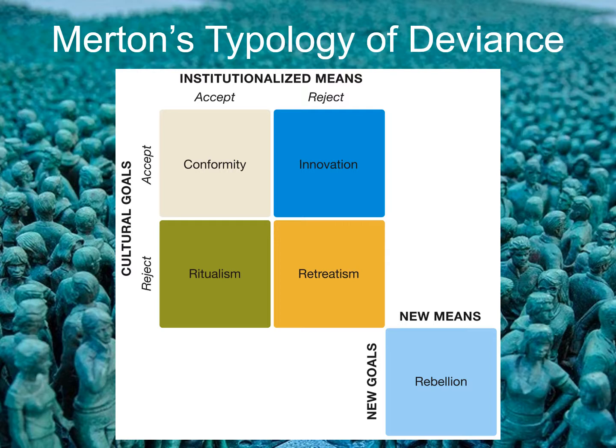Now let's look at Merton's typology of deviance. This table shows the possible combinations of goals and means acceptance. Remember, goals are not individual or personal goals, like saving enough money to buy a new smartphone. Rather, they are socially acceptable goals — like the American dream, having a good job, a nice home, a car, money, and so on. Means are the ways of making that happen — socially acceptable routes to achieving those goals, like going to college, working hard, starting at the bottom of the company ladder but working your way to the top.